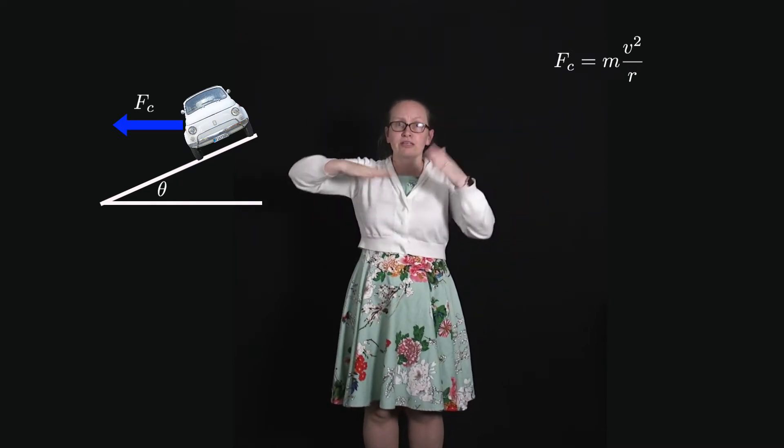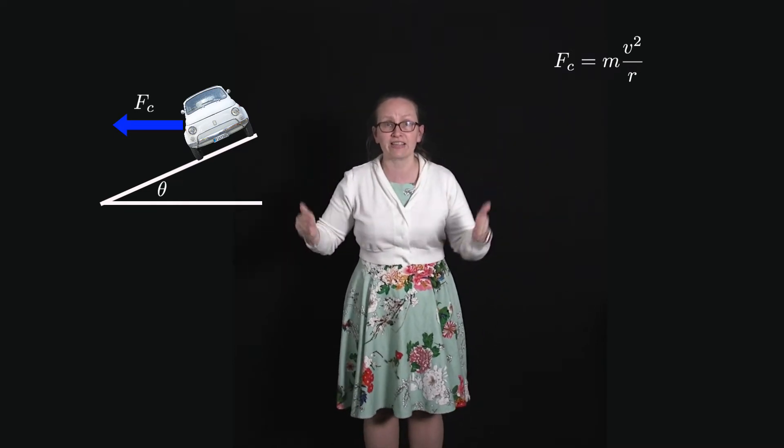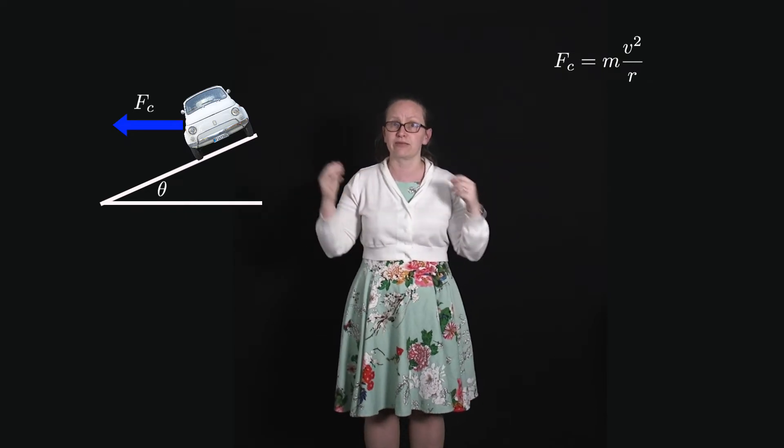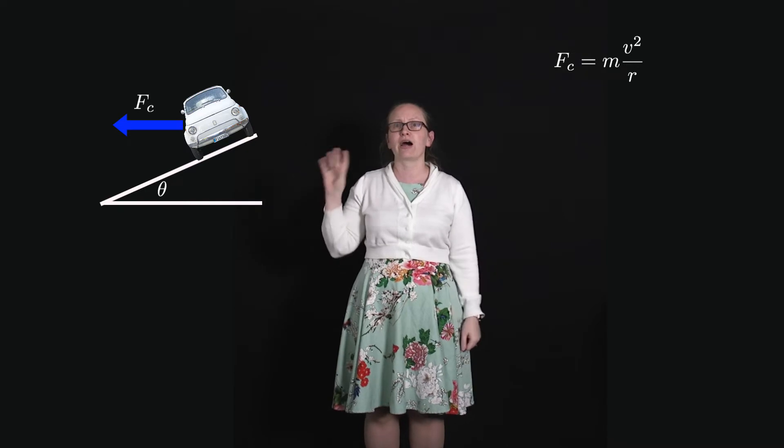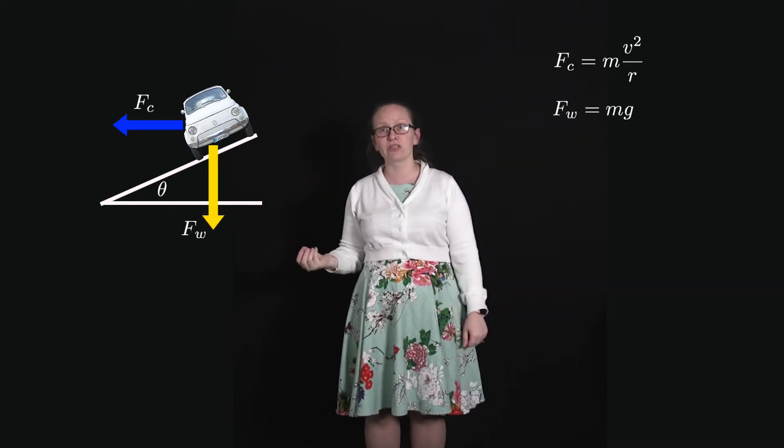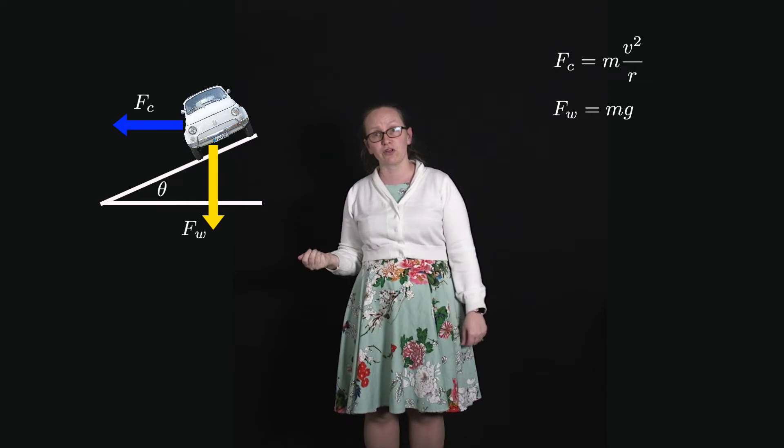Now considering the forces which are actually acting on the car. Remember there are forces acting which are causing this circular motion. The forces acting on the car: we've got the weight force which is pulling the car downwards, a vertically downwards force.